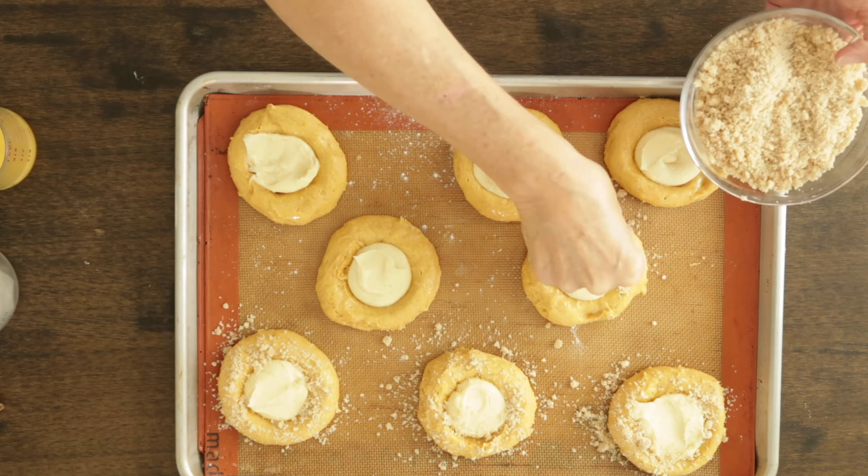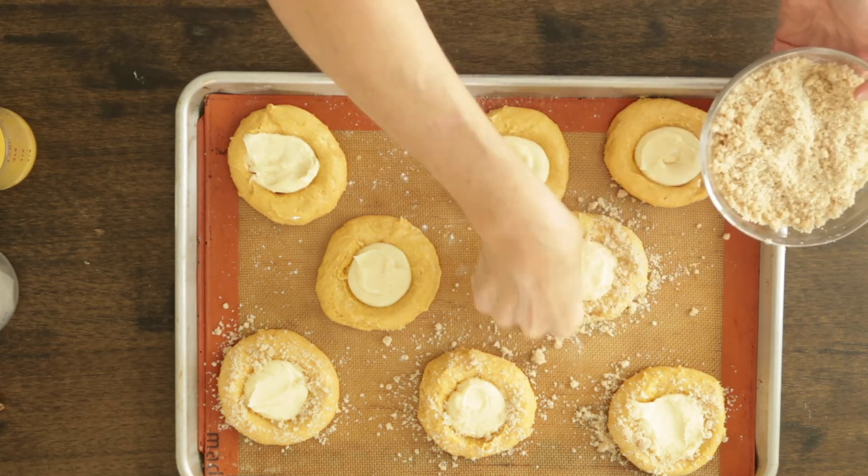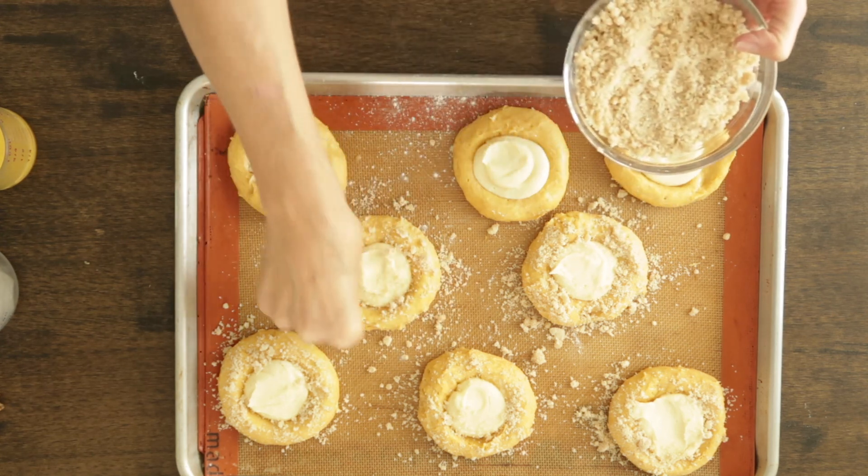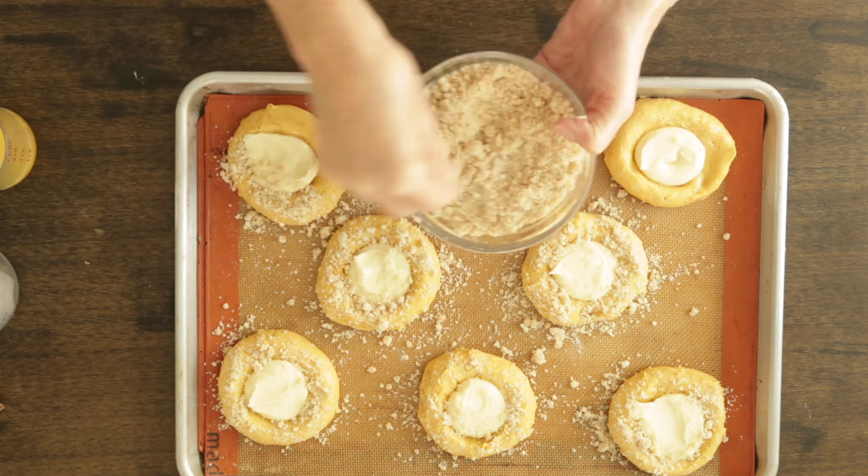The oven is preheated to 375 degrees and once they're topped they're going right in the oven. No more proofing is necessary for these kolachkis.